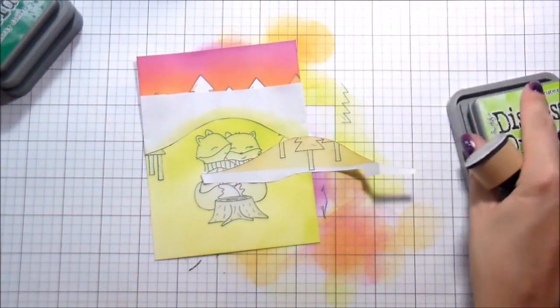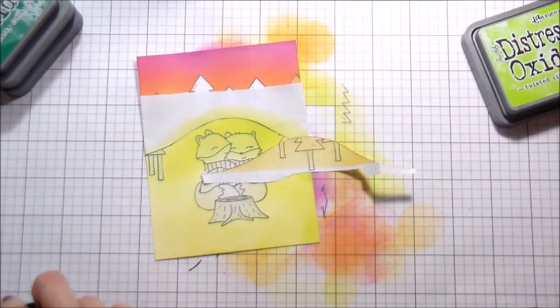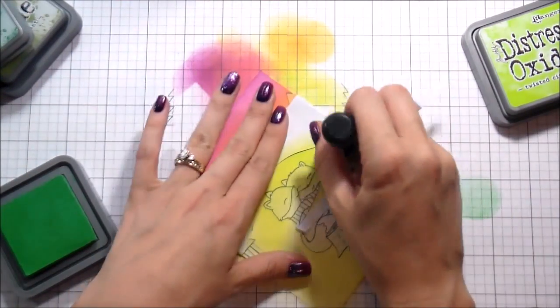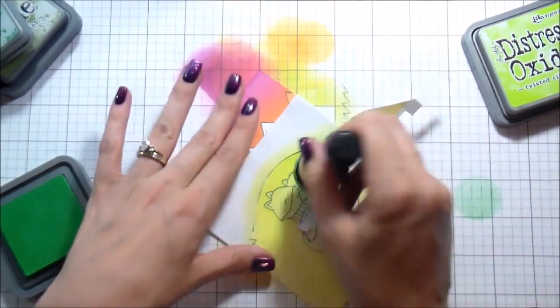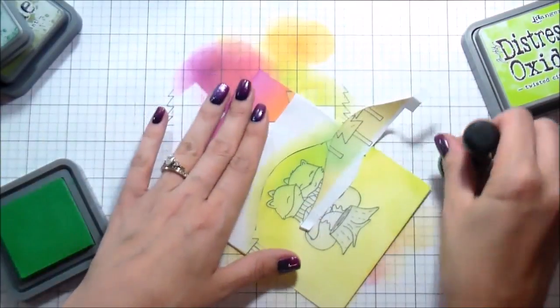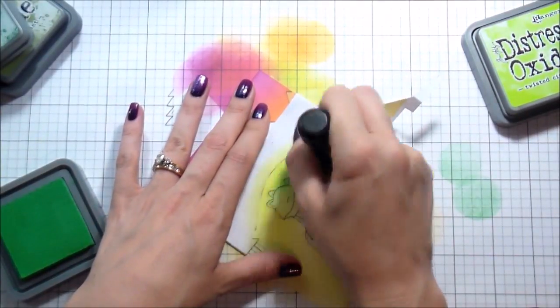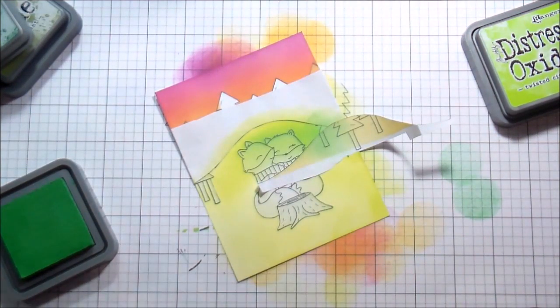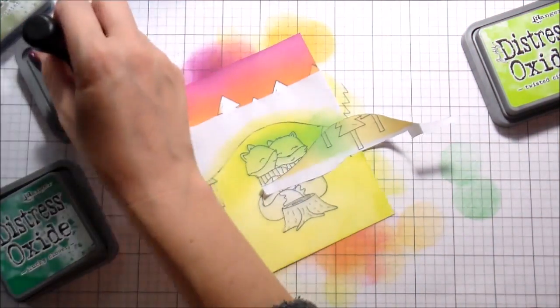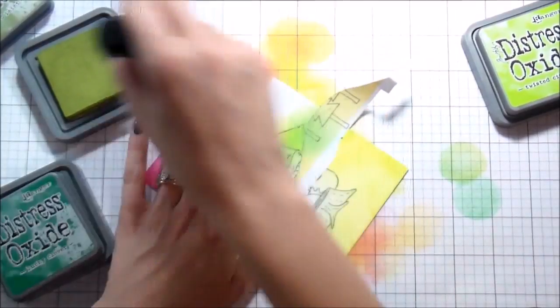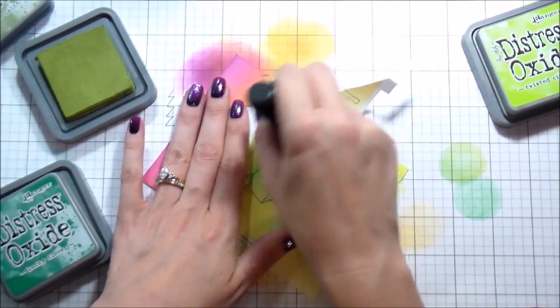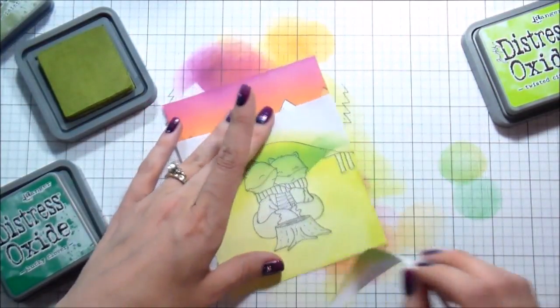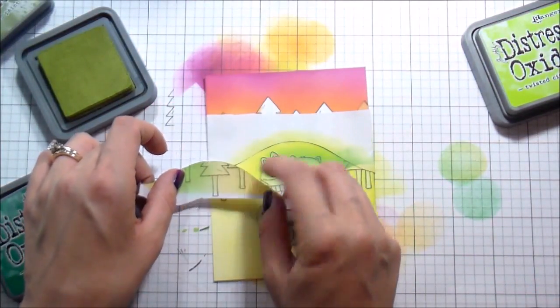So here I'm bringing in the positive of that mask to start to create some hills. So I'm putting that down and then I'm going to add shading actually behind the hill. So the highlight is going to be on the top edge. I'm not taking this all the way up to the top edge. I'm leaving that Twisted Citron on the top, but I'm adding a little bit of shading with the Lucky Clover and the peeled paint.